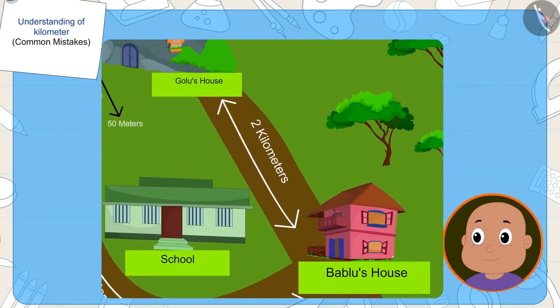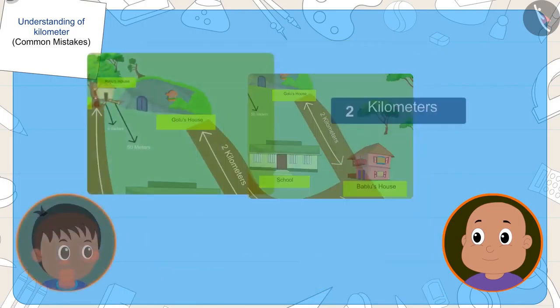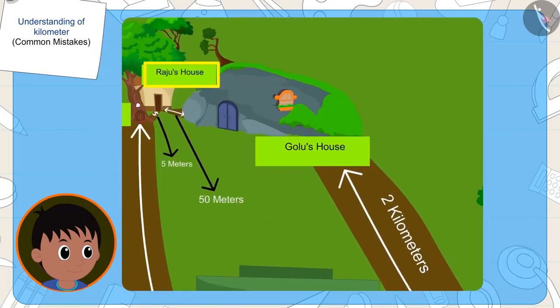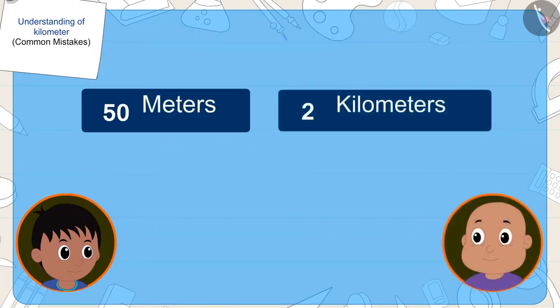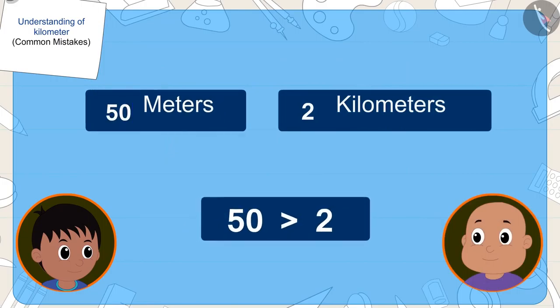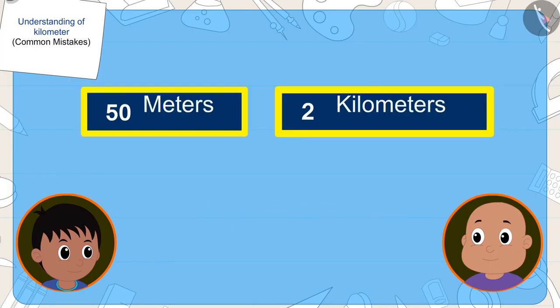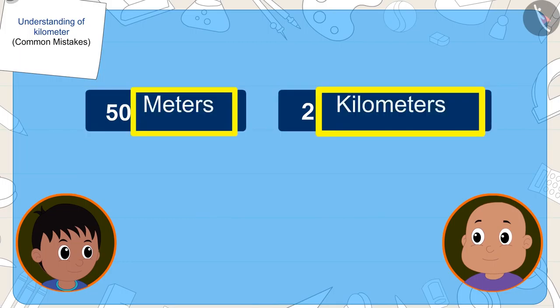This time, the number in the distance from Golu's house to Bablu's house, two, is lesser than the number in the distances from Golu's house to Raju's house, that is fifty. But once again, Bablu did not pay attention to their units when comparing the distances.